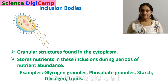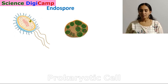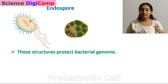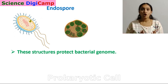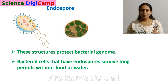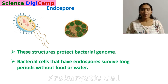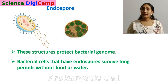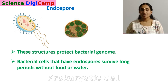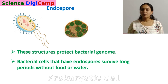Moving on to endospores. Endospores are observed in Gram-positive bacteria — they are special, resistant, dormant structures formed during unfavorable conditions. Endospores protect the bacterial genome, and bacteria that have endospores can survive for longer periods without food and water, and can also survive extreme conditions like ultraviolet and gamma radiation.